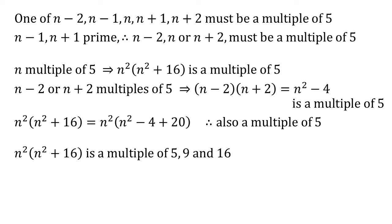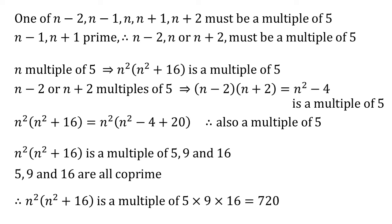So we've just shown that n squared, n squared plus 16 is a multiple of 5, 9 and 16. Those three numbers are coprime, so they don't share any factors other than 1. Because that's the case, our expression must be a multiple of them times together, 5 times 9 times 16 is 720. So our expression is a multiple of 720.